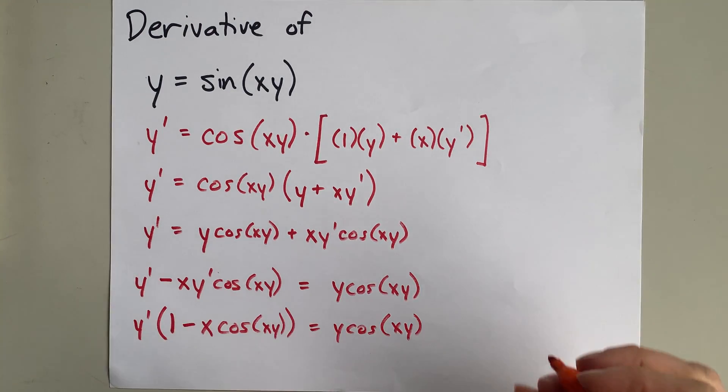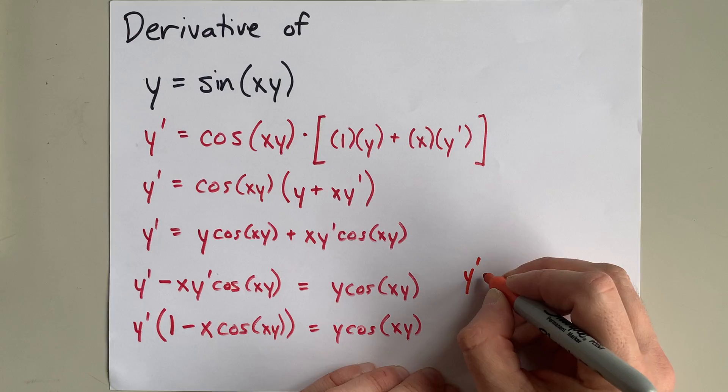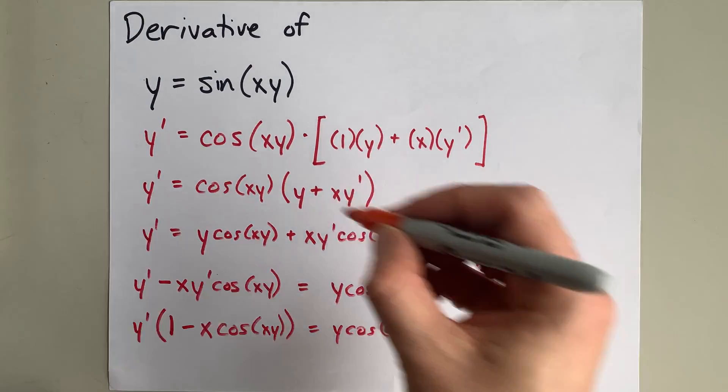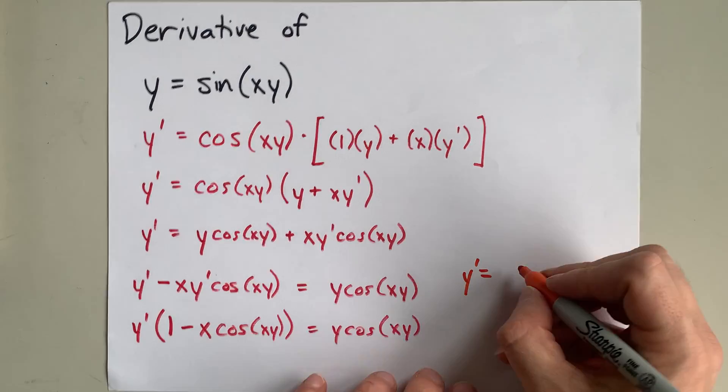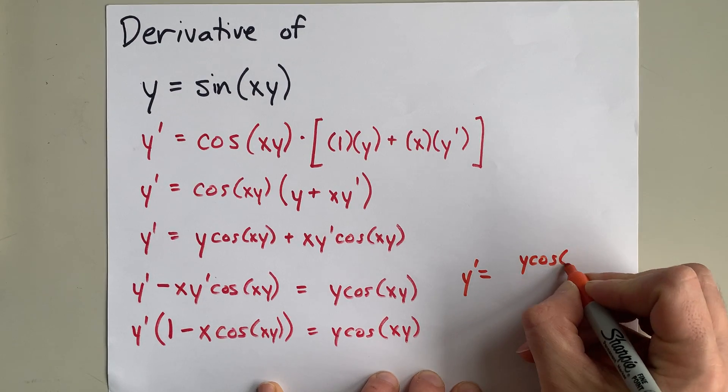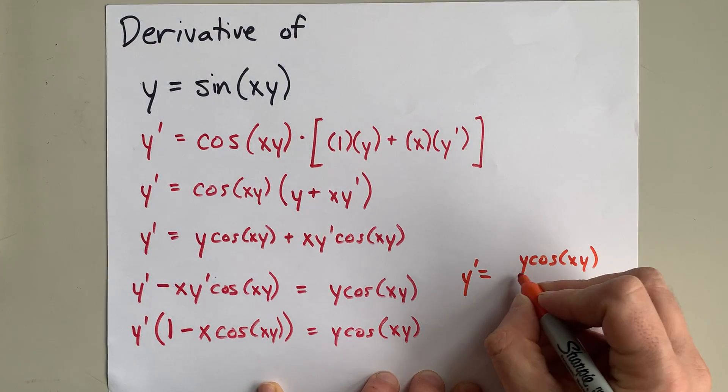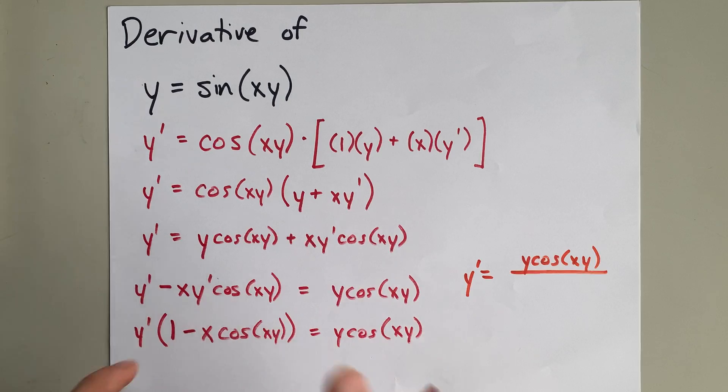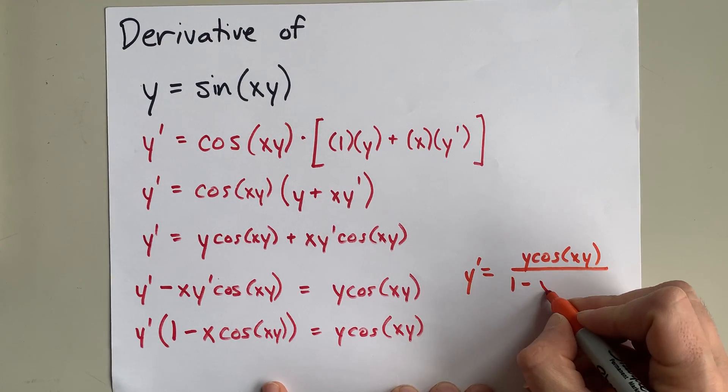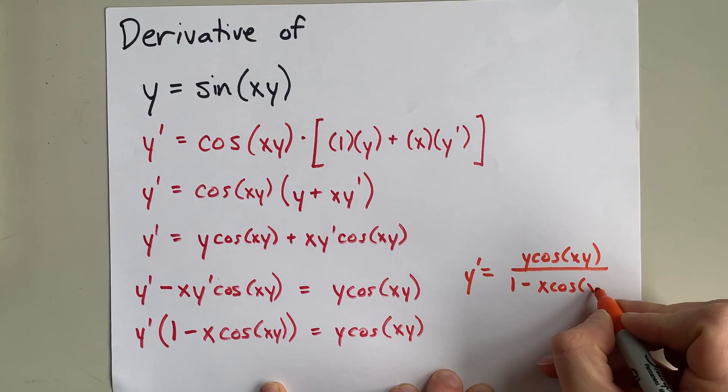My final answer here for y prime, or the derivative of y, is y·cos(xy) in the numerator of a fraction, and the denominator is 1 minus x·cos(xy).